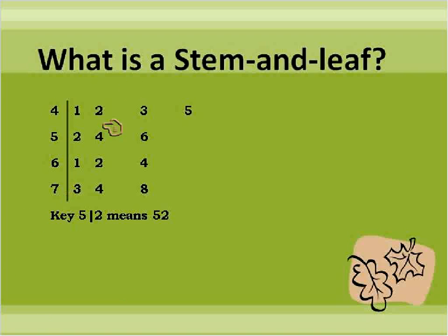So in this case, this is the tens column, this is the ones column. So if we picked a number randomly like this here, that 6 represents 5 in the tens column, 6 in the ones column. So that would be the number 56 right there.